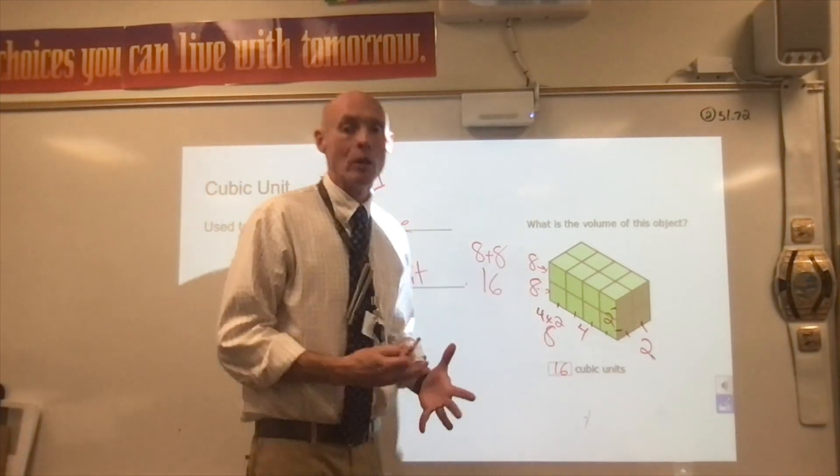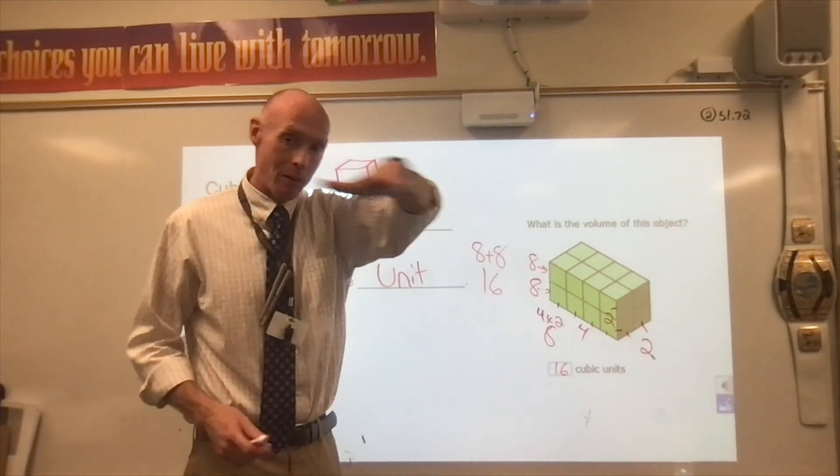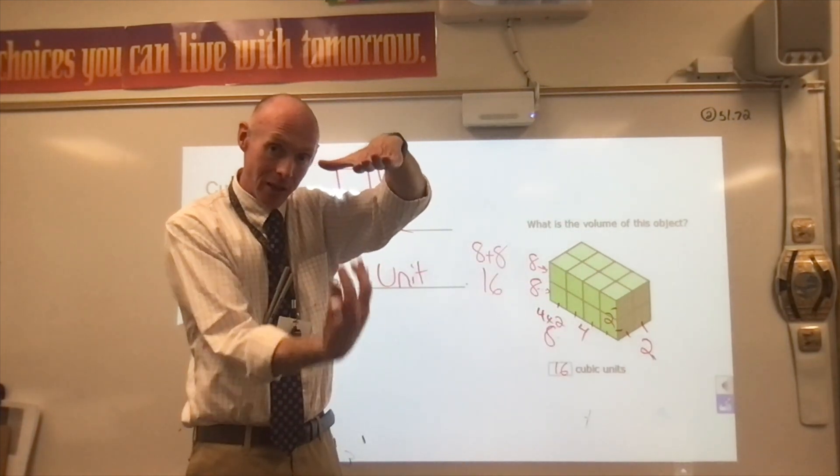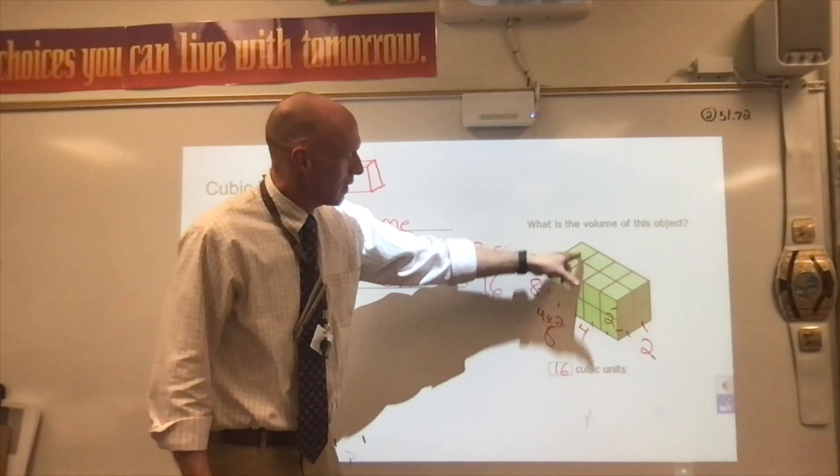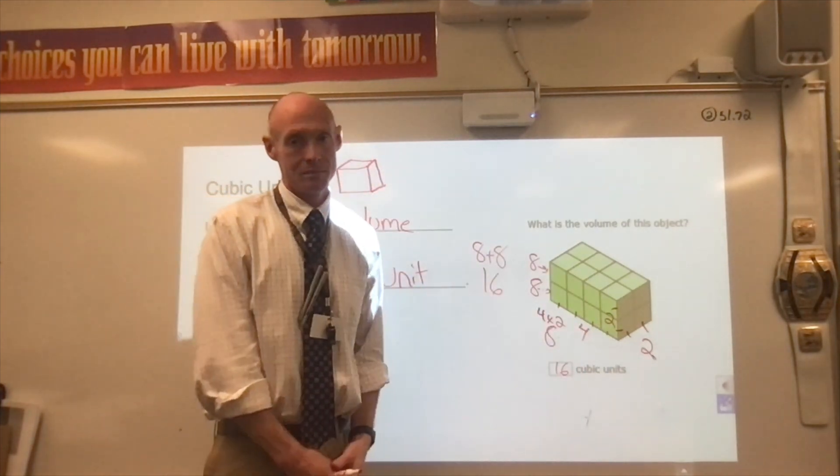Eight and eight means that there are 16 cubic units there. And again, you can't see all of the cubic units, but we know they're there. How do we know? That one's popped up, that one's on top. So there's got to be something underneath it supporting it. So there's going to be eight down here, another eight on top. Total of 16.